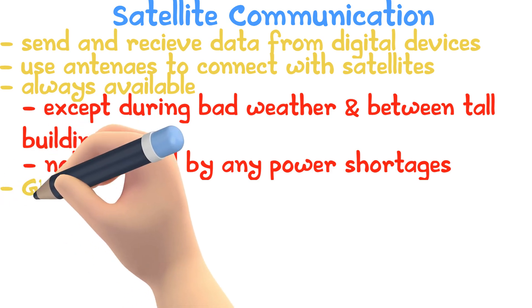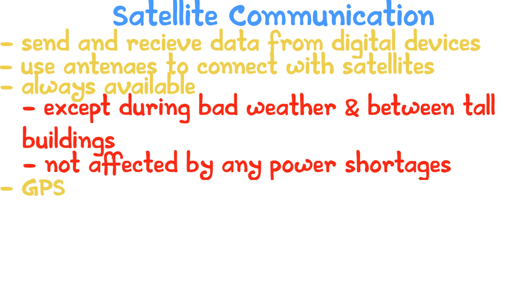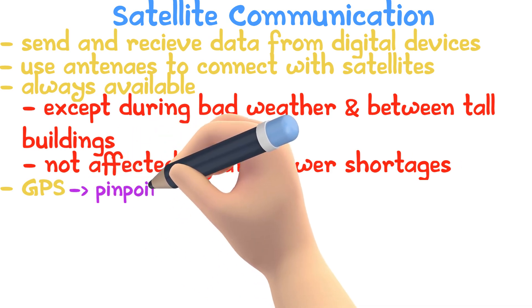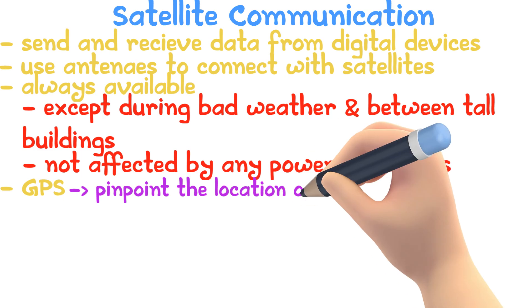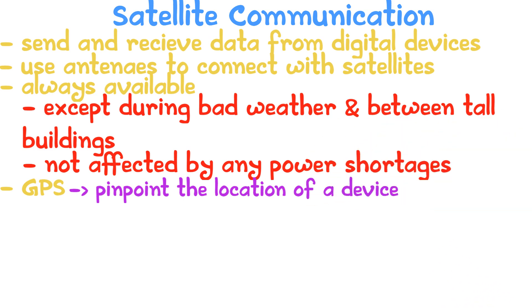GPS signals can be used to pinpoint the location of a device. These signals are sent from a set of 24 satellites, so at any point in time a device will be in view of 12 satellites.